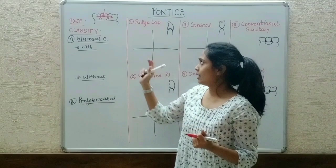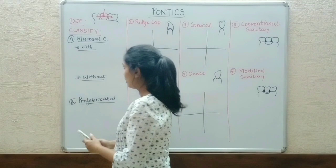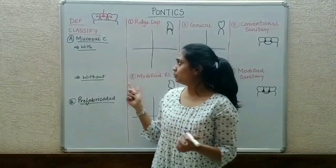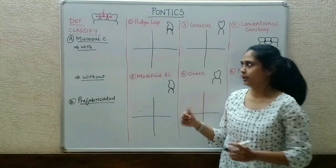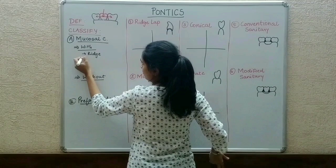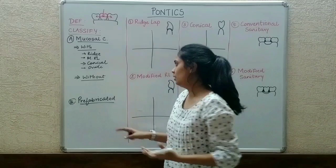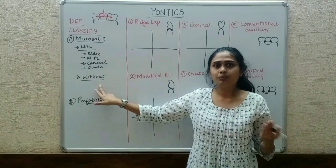Moving on to the classification: Pontics are classified based on mucosal contact and prefabricated types. In mucosal contact we have two types — with mucosal contact and without mucosal contact. In 'with mucosal contact' we have four varieties: ridge lap, modified ridge lap, conical, and ovate.